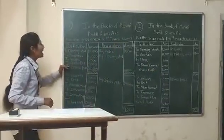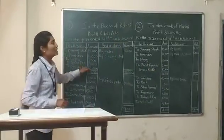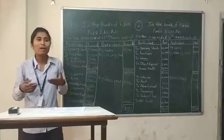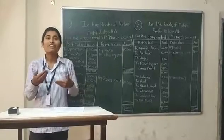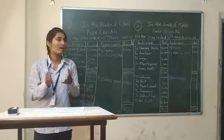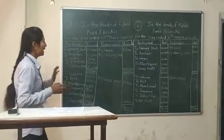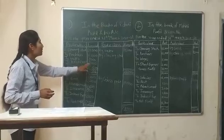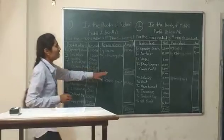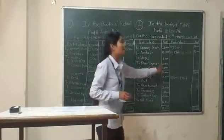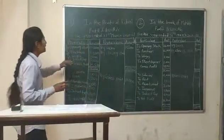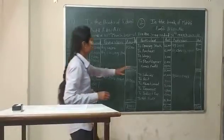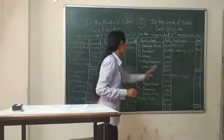The fourth item is direct expenses. Those are expenses directly related to manufacturing a product, and are known as direct expenses. Direct expenses for Rohini are $5,000 and for Mohini are $2,000, giving a difference of $3,000.